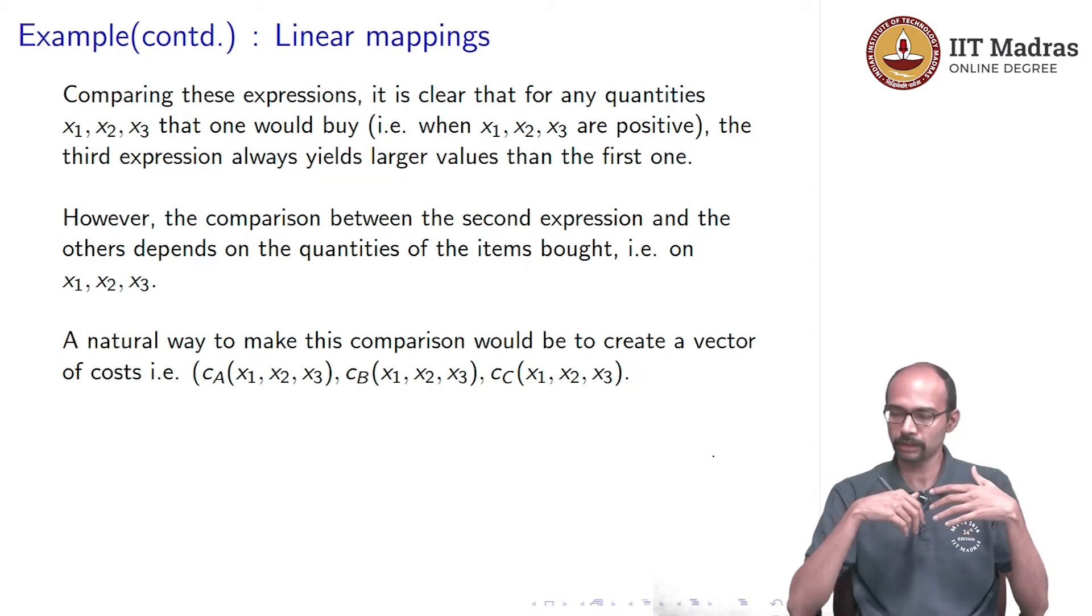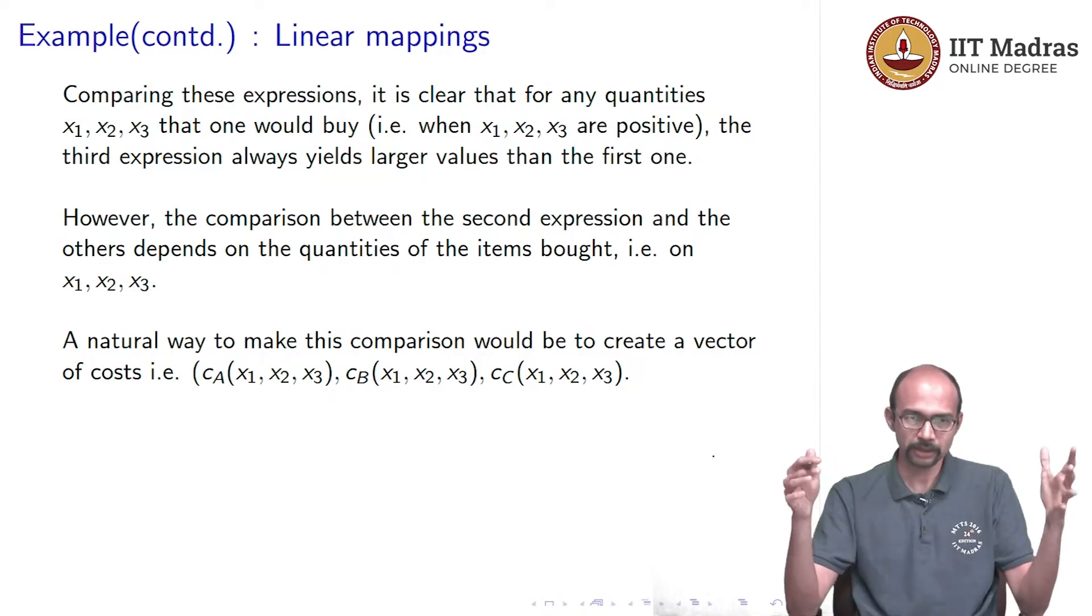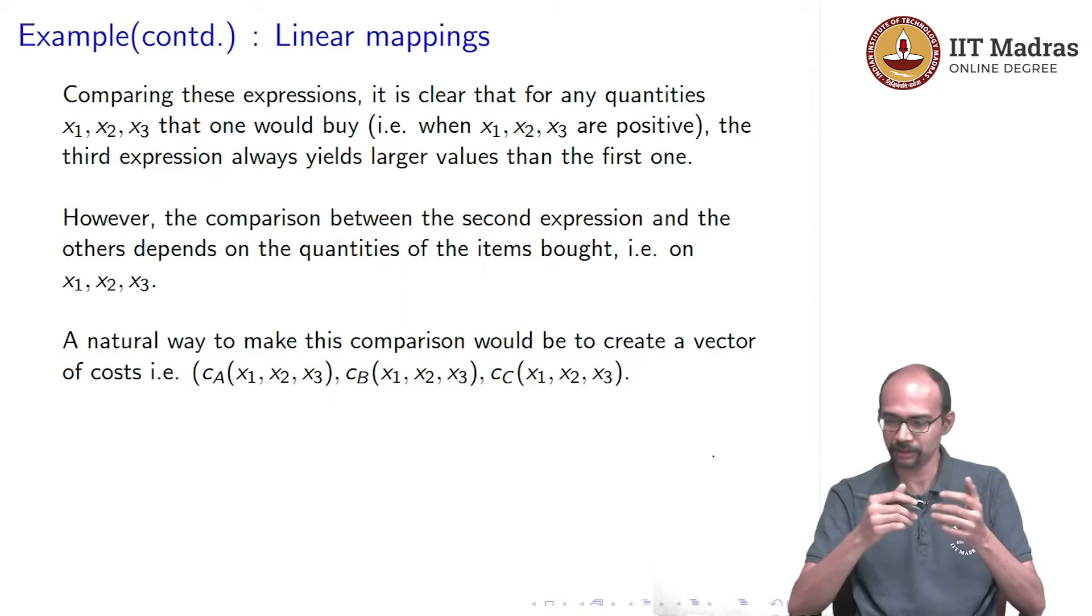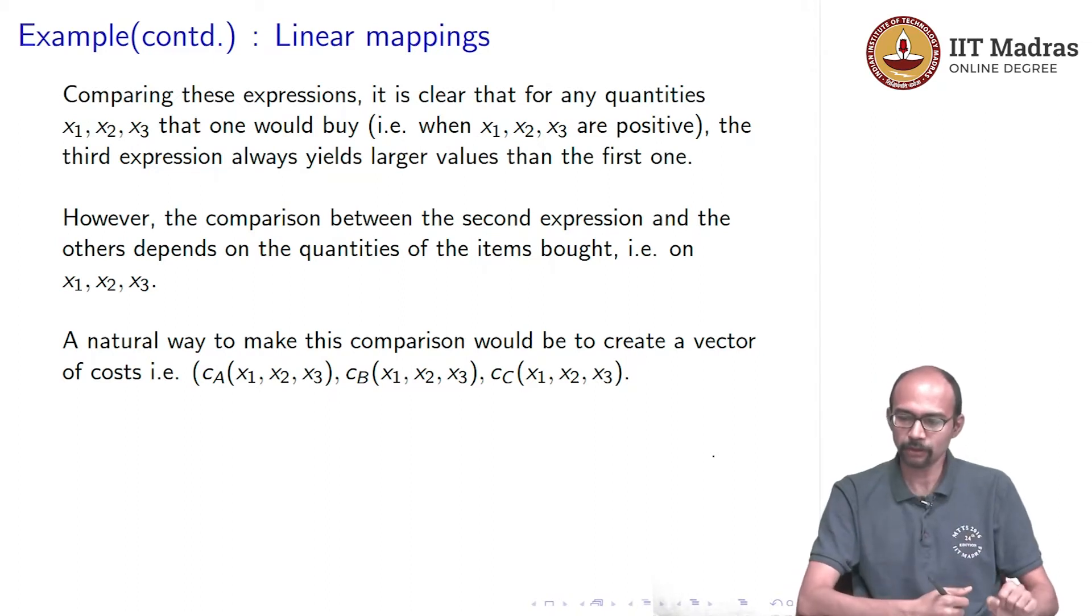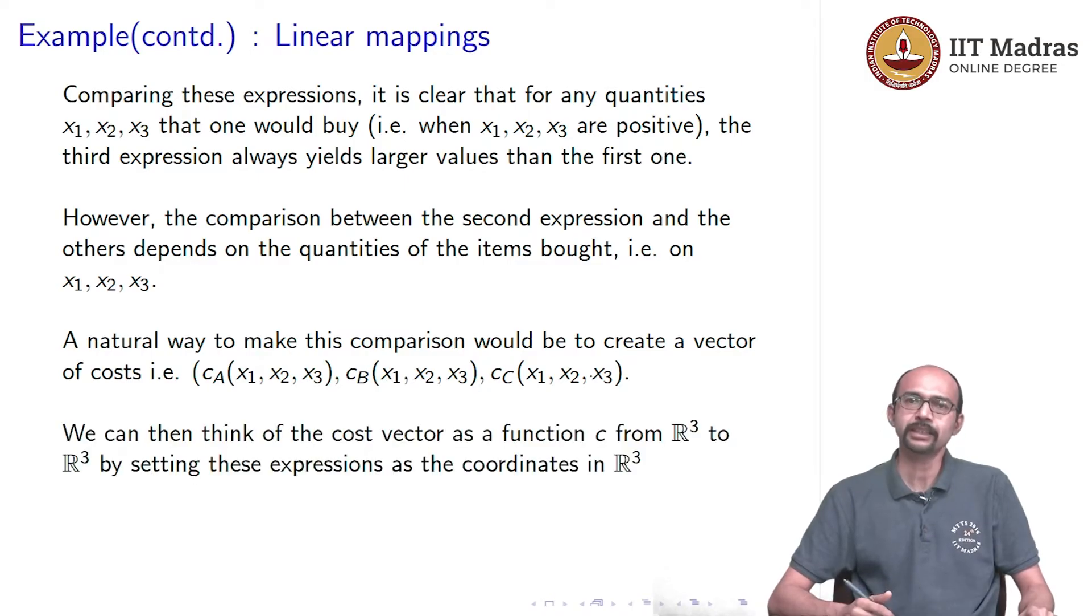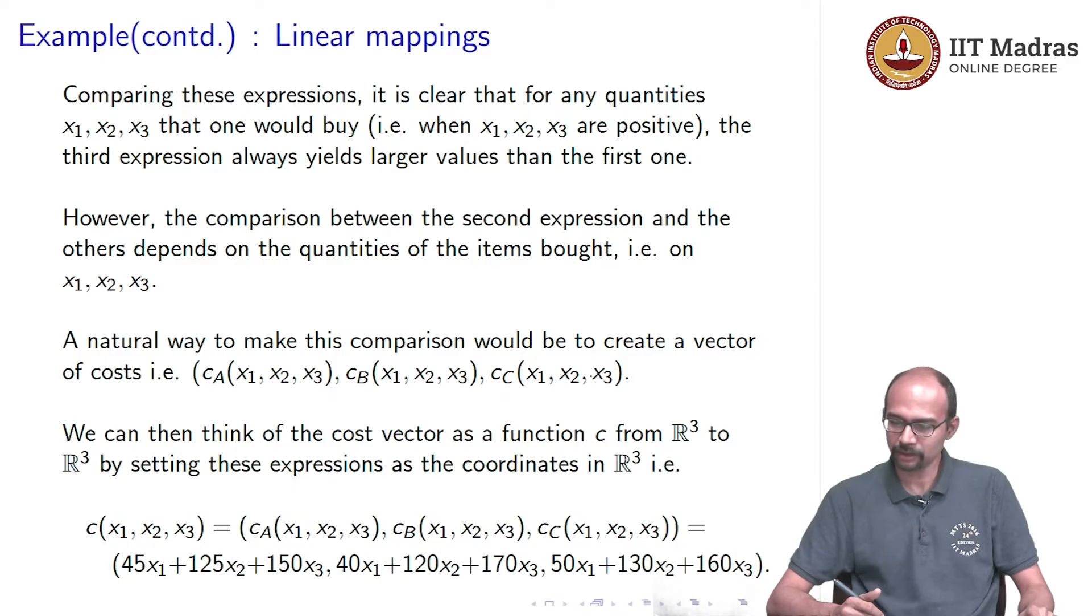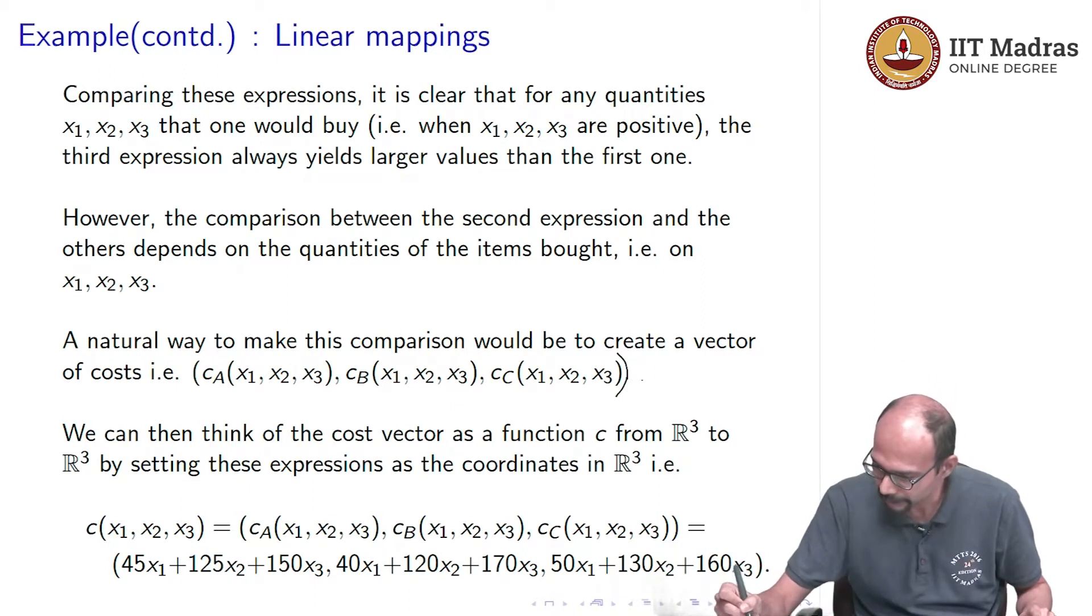The idea, the natural way of doing this would be to treat them together, CA, CB and CC, we could think of them as a vector. So, you look at this vector CA, CB, CC and then we can think of this actually as a function, because each of these after all are functions from R3 to R. So, this vector can be thought of as an element of R3, it is a point of R3. So, we can think of the cost function, which is C of (x1, x2, x3) is CA of (x1, x2, x3), CB of (x1, x2, x3), CC of (x1, x2, x3).